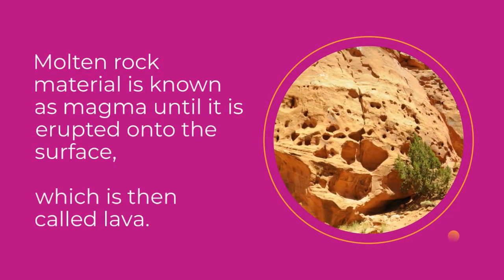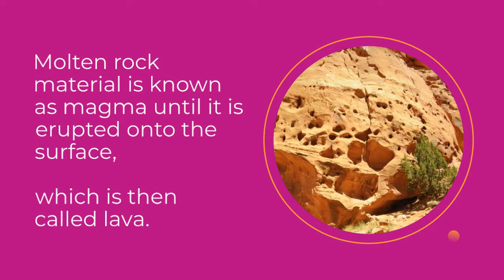Molten rock material is known as magma until it is erupted onto the surface, when it is then called lava.